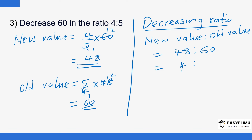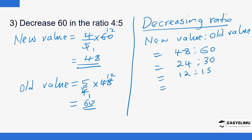To find the decreasing ratio: new value to old value is 48 to 60. You can divide successively by 2: first getting 24 to 30, then 12 to 15. Since 12 and 15 are no longer divisible by 2, divide by 3 to get 4 to 5. Alternatively, 12 goes into 48 four times and into 60 five times, arriving at the same final ratio of 4 to 5.